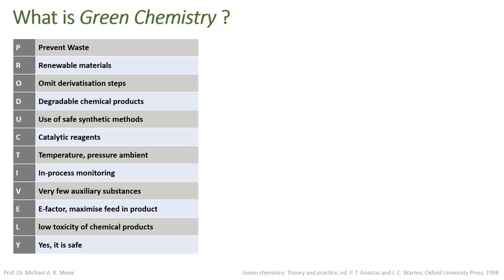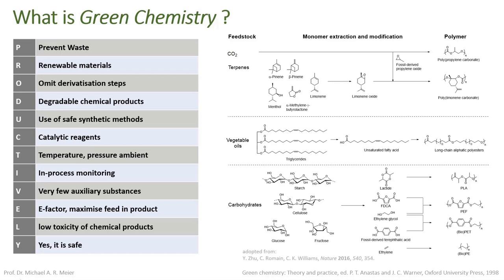Going through 'PRODUCTIVE': P stands for preventing waste — producing less waste means more efficient chemistry and less environmental impact. R is for renewable materials, such as terpenes, vegetable oils, carbohydrates, and even CO2 as feedstocks for monomer and polymer synthesis. Some of these are being commercialized as substitutes for fossil-based polymers, which are the chemical industry's largest output at over 300 million tons annually.